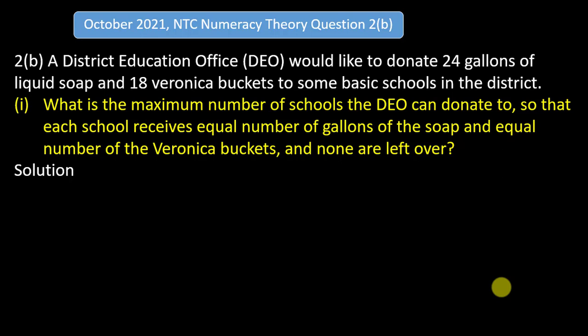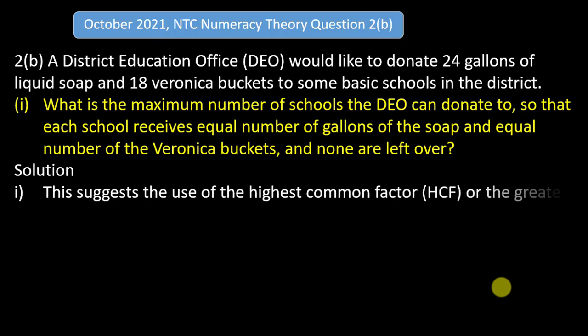Since they are looking for the maximum number, we ask ourselves: what is the maximum number we can use to divide both 24 and 18? That brings us to the issue of factors — more specifically, the greatest common factor or highest common factor, since the highest common factor is the highest divisor of a given set of numbers. This suggests the use of the highest common factor (HCF).